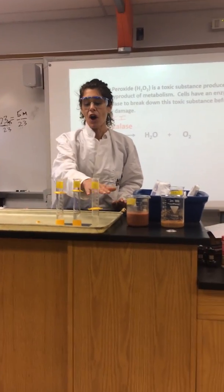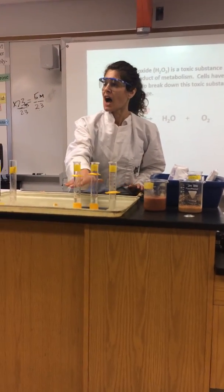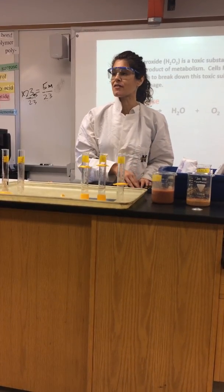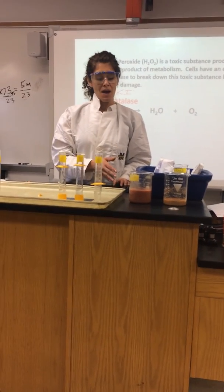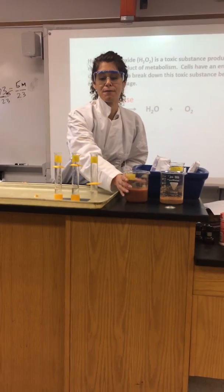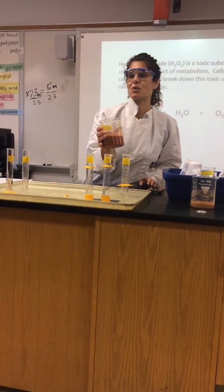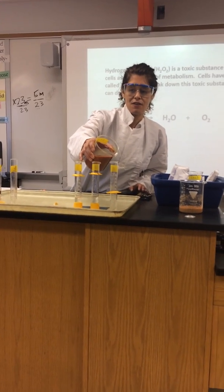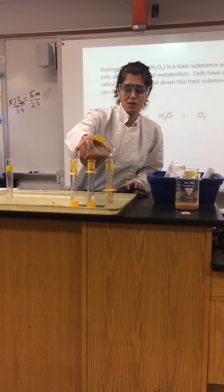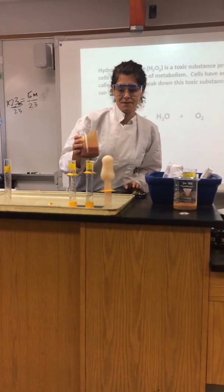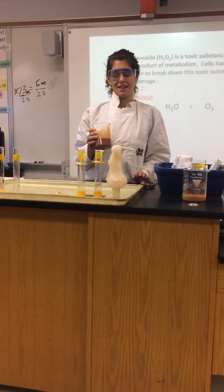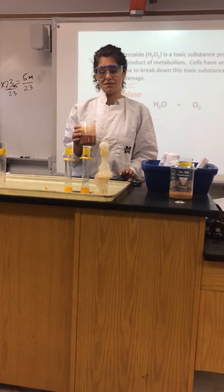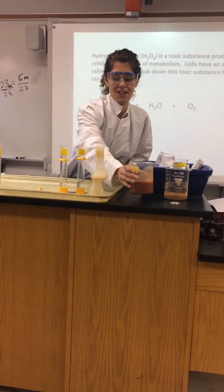I have already put in the hydrogen peroxide, and I'm just going to add my three types of liver: my room temperature, my boiled, and my cold. The first graduated cylinder, which is the first row in your data table, is the fresh liver at room temperature. That's a lot of bubbling, and it's actually smoking too — so that's a lot of reactivity.